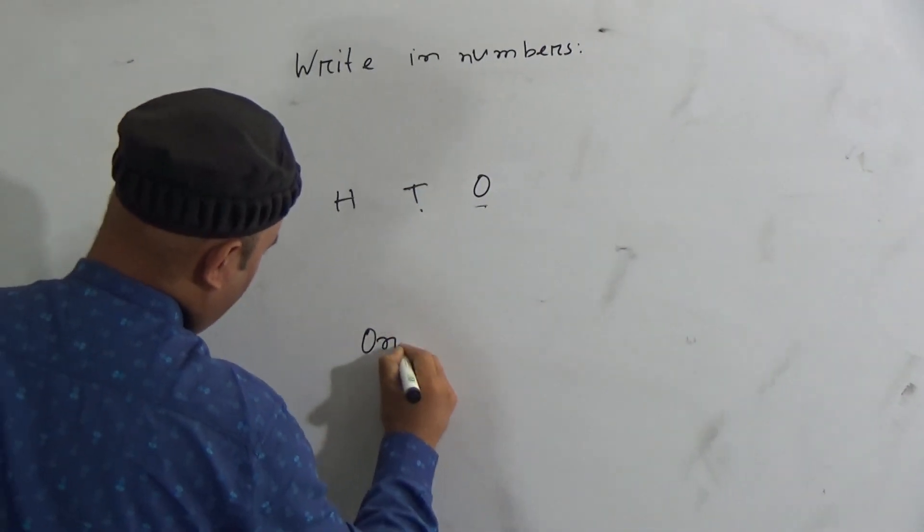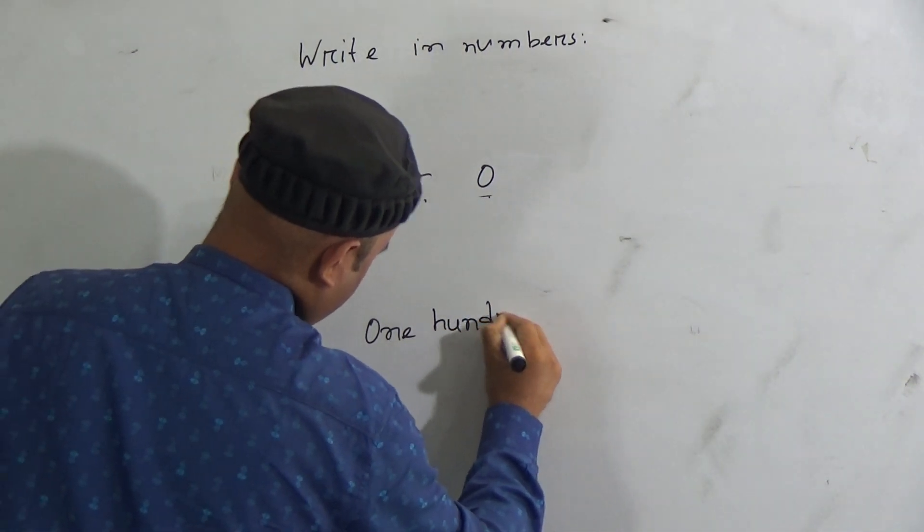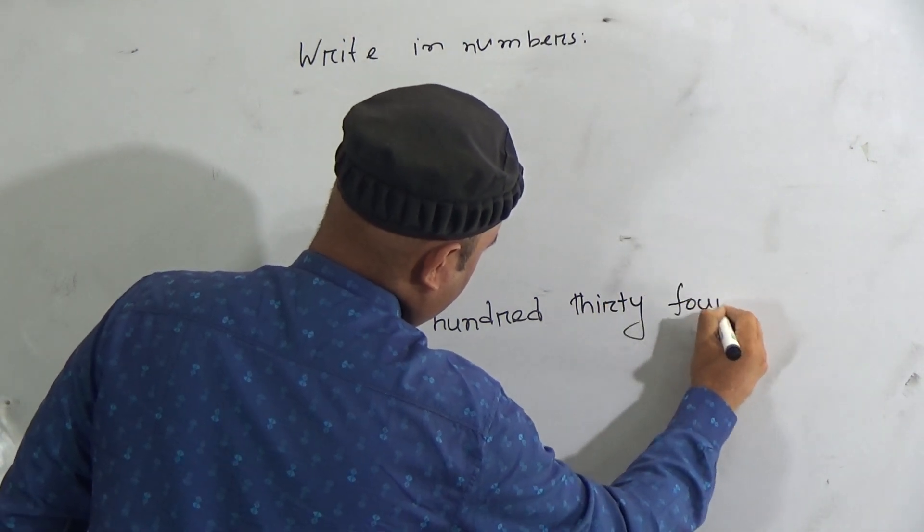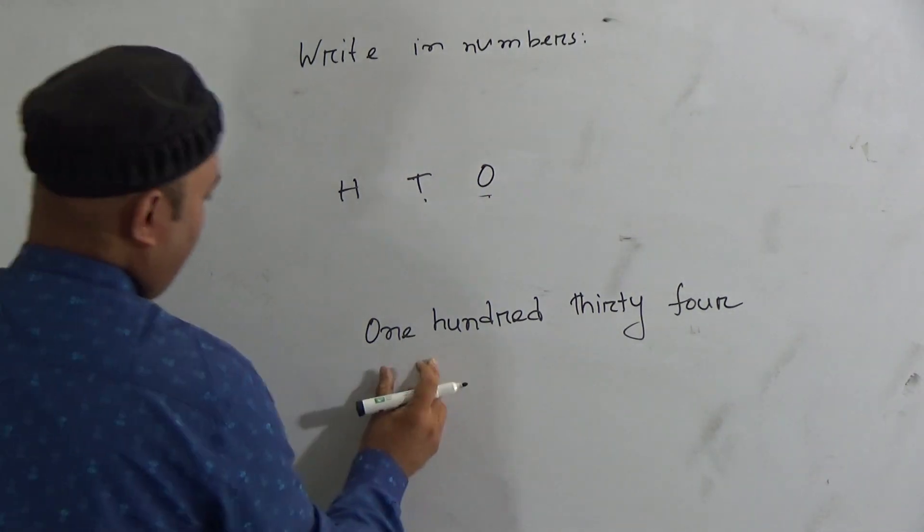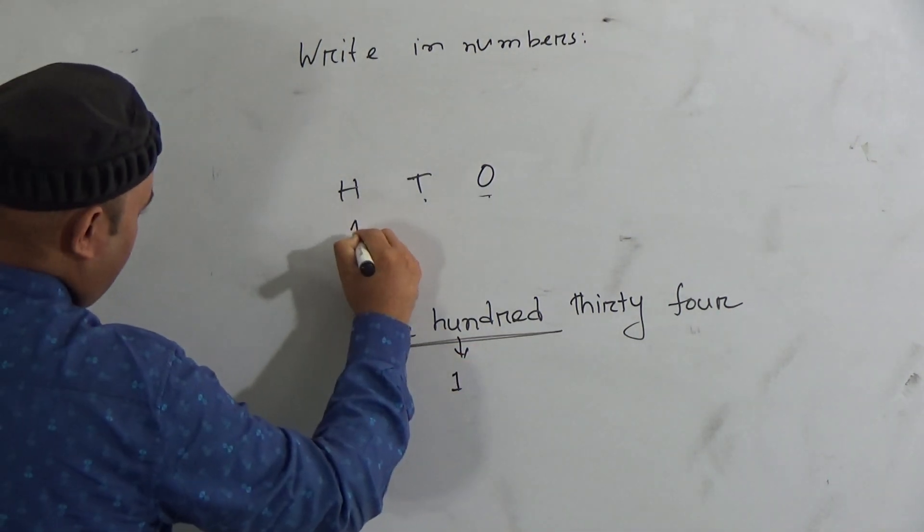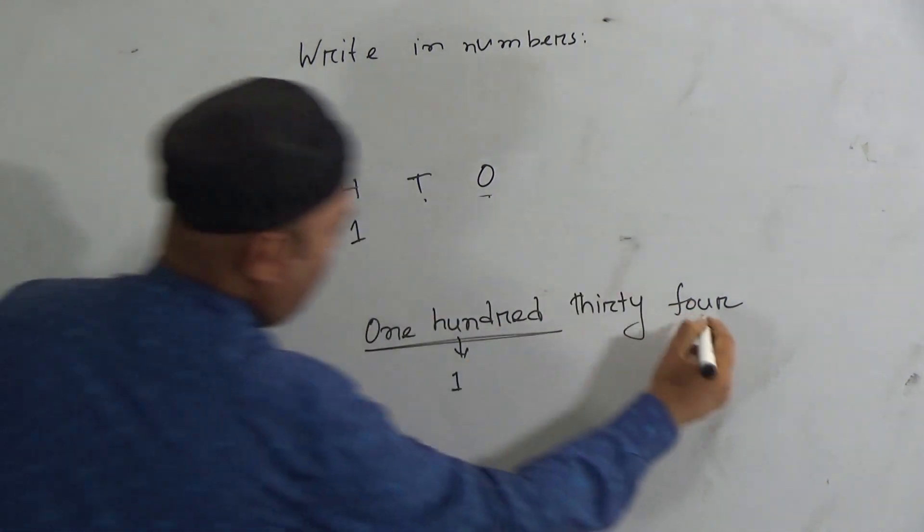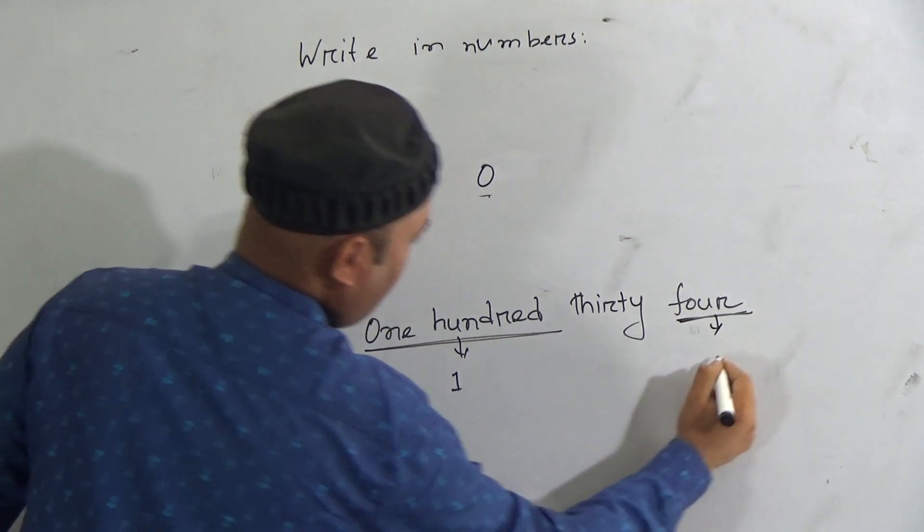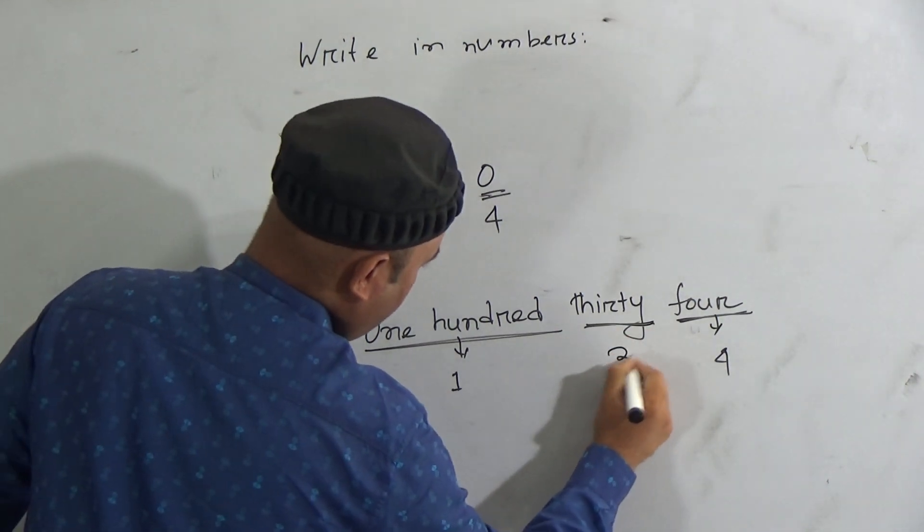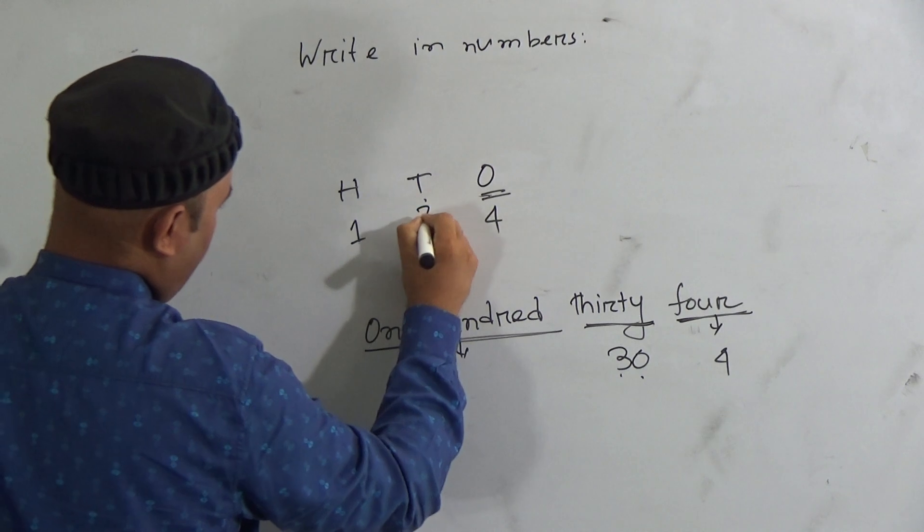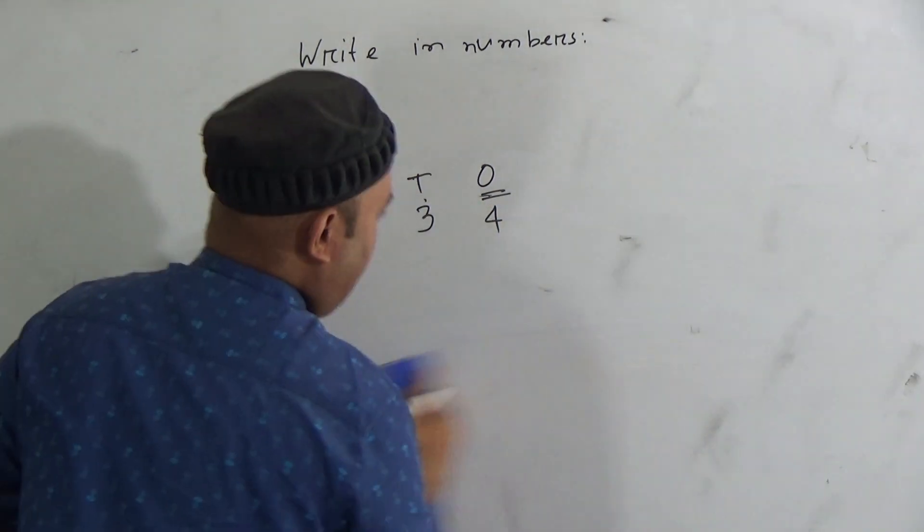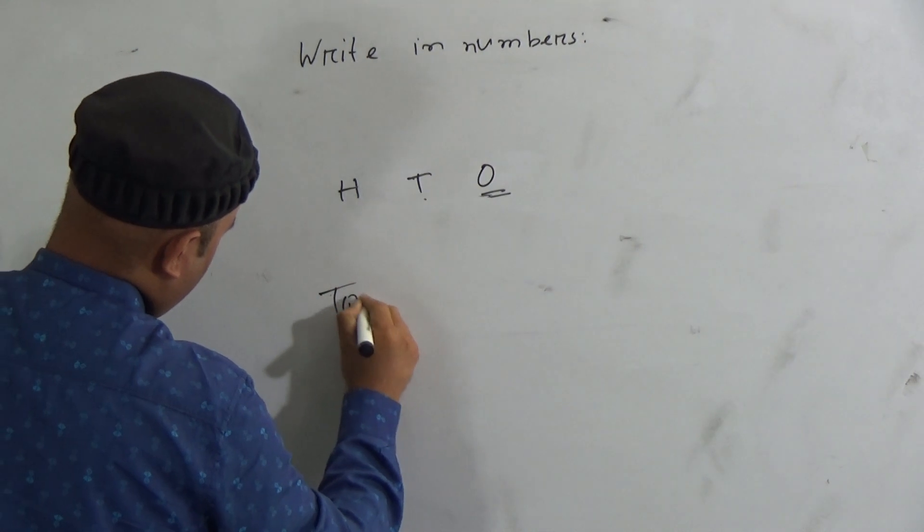If I write 134, then look here, how many hundreds are there? Here is 1 hundred, so you have to write 1 in hundred place. Now the last digit is 4, so you have to write 4 in ones place. In the middle here is 30. 30 means 3 tens, so you have to write 3 in tens place. So it is 134.